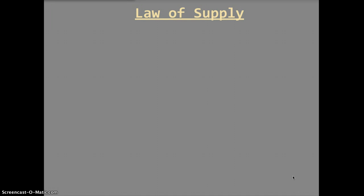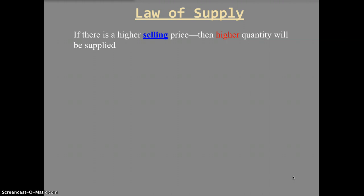There's something called the law of supply, which is a rule that must be followed. It simply states that if the selling price goes up, then the quantity produced will go up as well. A higher selling price results in a higher quantity being produced.